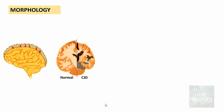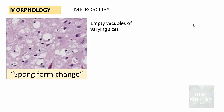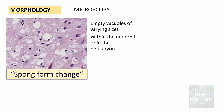The morphological features of CJD: grossly, there is evident atrophy of the brain with shrinkage of the brain parenchyma compared to a normal brain, and there is also ventricular dilatation. Microscopically, the characteristic feature is spongiform change — empty vacuoles of varying sizes located within the neuropil, within the cytoplasm of neurons, in the perikaryon, in axons, or in dendrites.